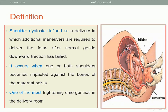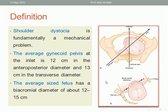It is one of the most important obstetric emergencies you should know about. To understand it more, please look at this picture. It is a fundamental mechanical problem. This is the bi-acromial diameter, which ranges between 12 to 15 cm, and the average gynecoid pelvis anteroposterior diameter is about 12 cm, while the transverse diameter is 13 cm. The baby tries to accommodate to enter through the diameters of the pelvis by approximation of both shoulders together.